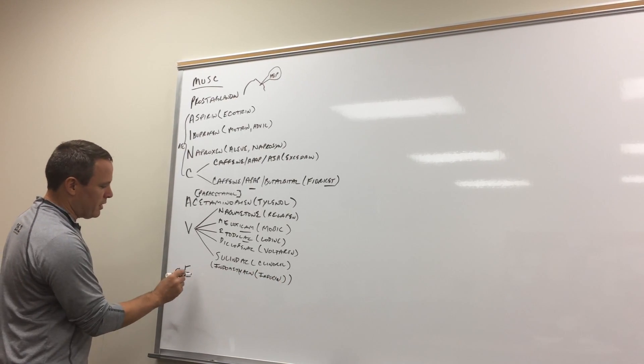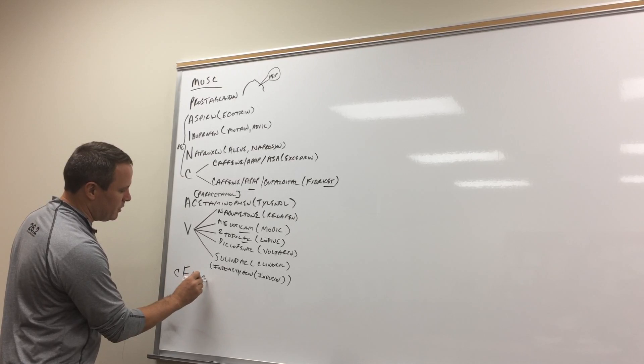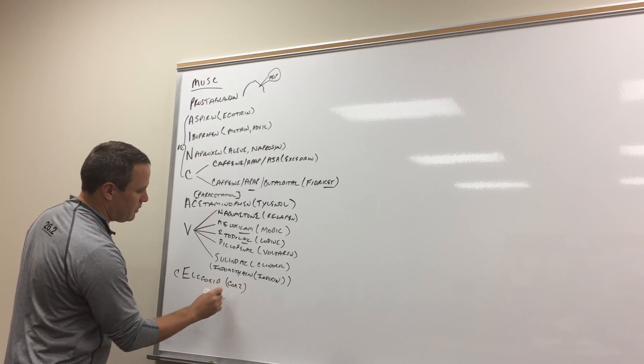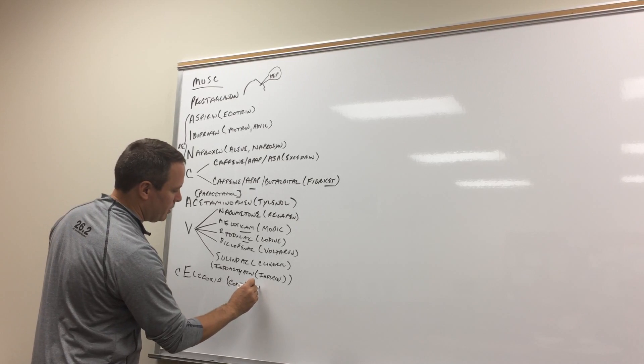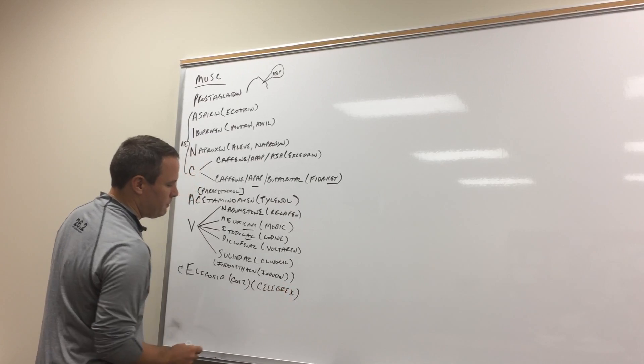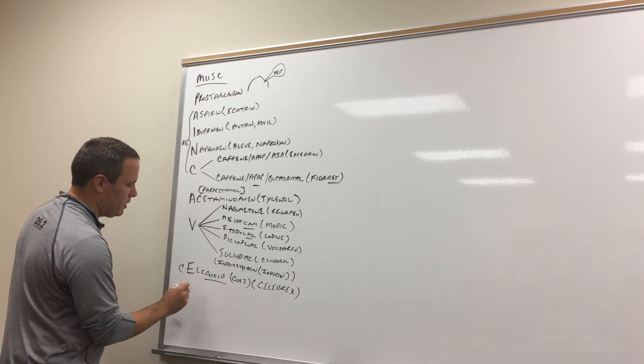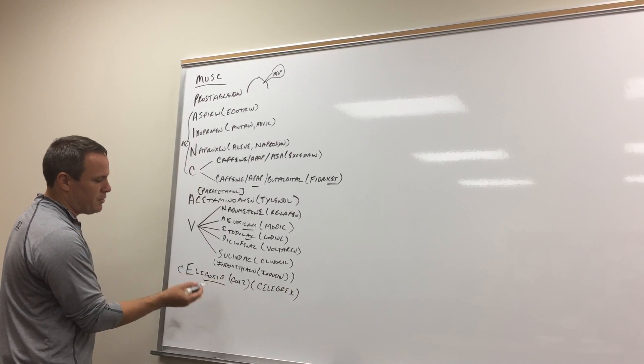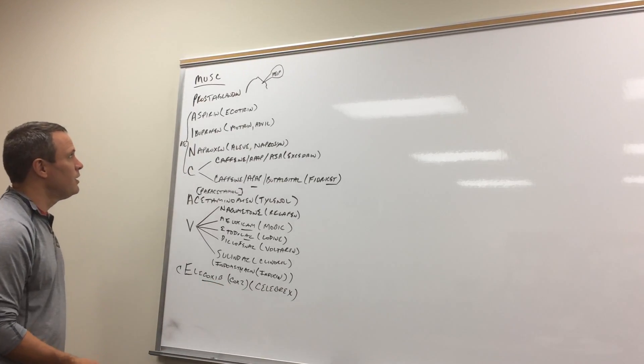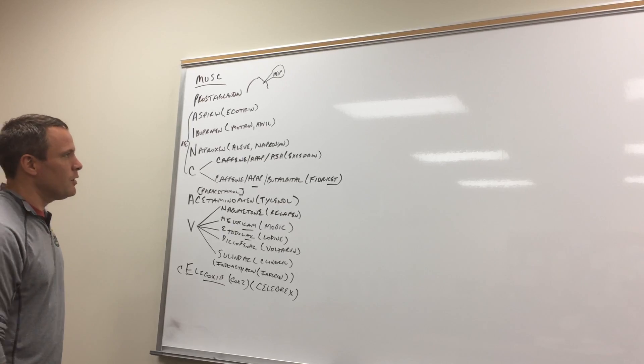And then the E is the second letter, celecoxib. And that's a COX-2 inhibitor. And the brand name is Celebrex. Like you are celebrating your relief from arthritis pain. And there are two E's in there and two C's. So that's how you remember it's a COX-2 inhibitor. So those are NSAIDs and so forth.